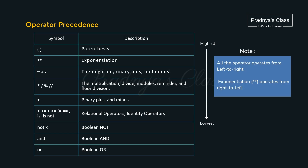One of the important topics in all programming languages is operator precedence — it decides the order in which operators get evaluated. In board exams, we surely get a question where we evaluate an expression based on operator precedence. In the table, operators are arranged from highest to lowest precedence. The highest is parenthesis (P), then exponentiation (E). Next are arithmetic operators (A) — within arithmetic, multiplication, division, and modulus have higher priority than plus and minus.